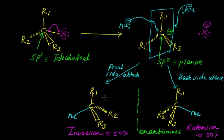Taking another example of an SN1 reaction, we again get inversion in configuration around 50% and retention in configuration around 50%, confirming the formation of a racemic mixture.